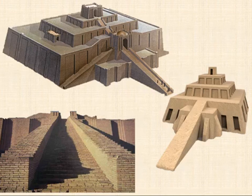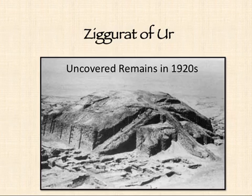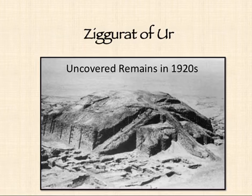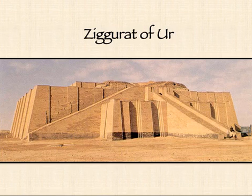Ziggurats were believed to be dwelling places for the gods, and only priests were permitted within. It was their responsibility to care for the gods and attend to their needs. One of the most famous ziggurats is the Ziggurat of Ur. It was uncovered in the 1920s and is one of the best preserved structures from its time. It's unknown how many levels the ziggurat originally had, but researchers used ancient descriptions and representations of ziggurats to reconstruct it as best they could in models. The monument itself was repaired so that visitors can climb to the top of the first level.